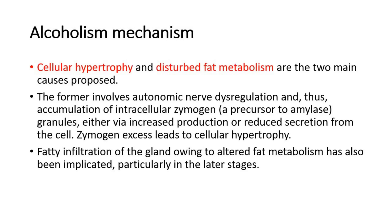For its mechanism in alcoholism, cellular hypertrophy and disturbed fat metabolism are the two main causes proposed. The former involves autonomic nerve dysregulation, and thus accumulation of intracellular zymogen granules, either via increased production or reduced secretion from the cell. Zymogen excess leads to cellular hypertrophy.